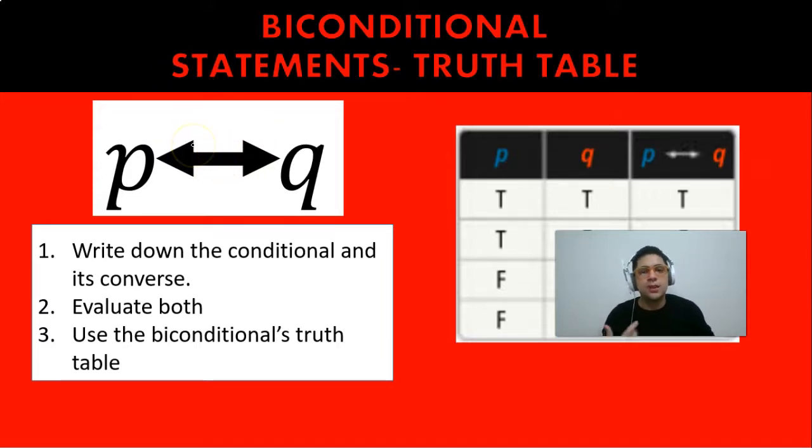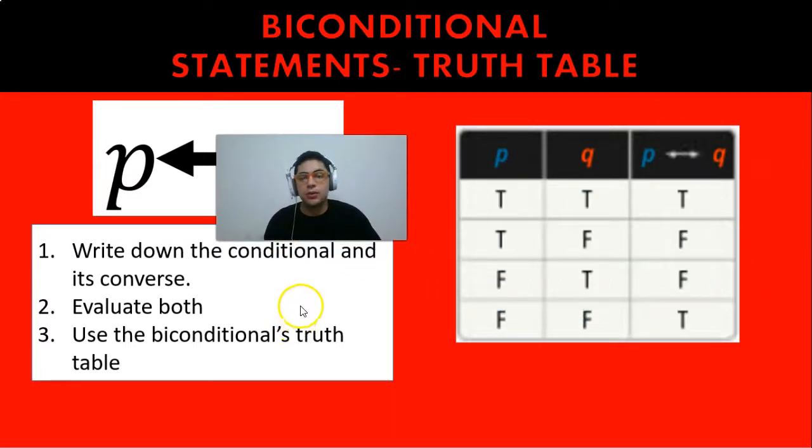You can think of biconditional statements as two-way streets, so they both have to be true in order for the biconditional statement to be true, or both false. So we have: if P is true and Q is true, the biconditional is true. If P is true and Q is false, then it's false. False true is false. But if both P and Q are false, then we are also proving the biconditional.